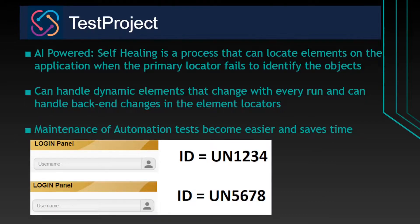TestProject has that capability — it is AI-powered, so even though the primary locator has failed, it can identify the objects. It can also handle dynamic elements that change every day. If you have an object whose locator changes dynamically, such scenarios can be handled with AI. You can also handle backend changes in element locators.